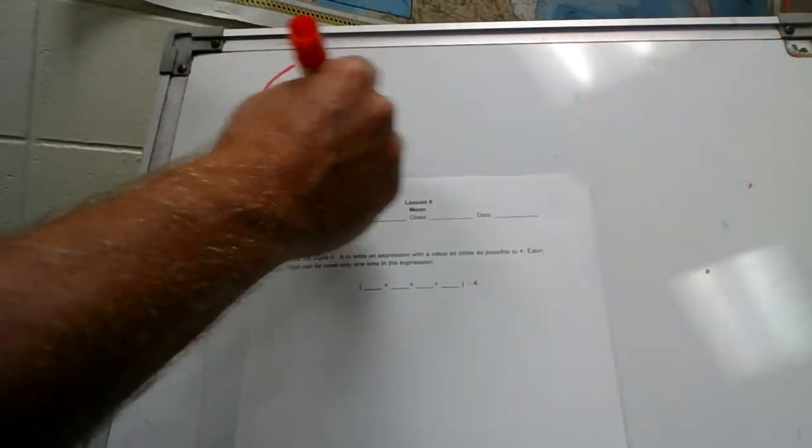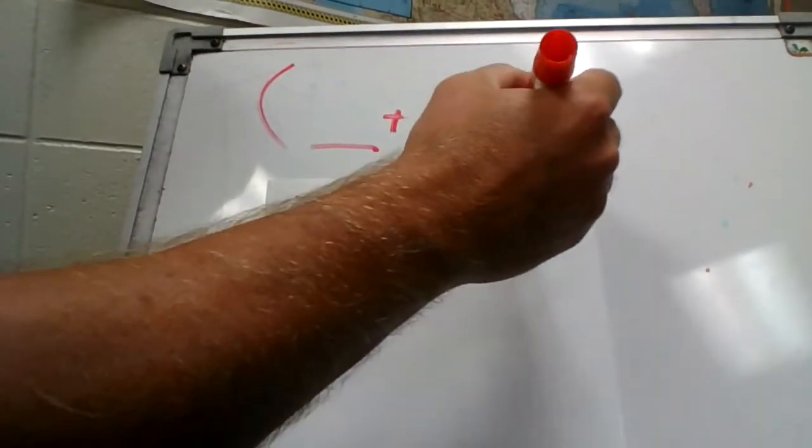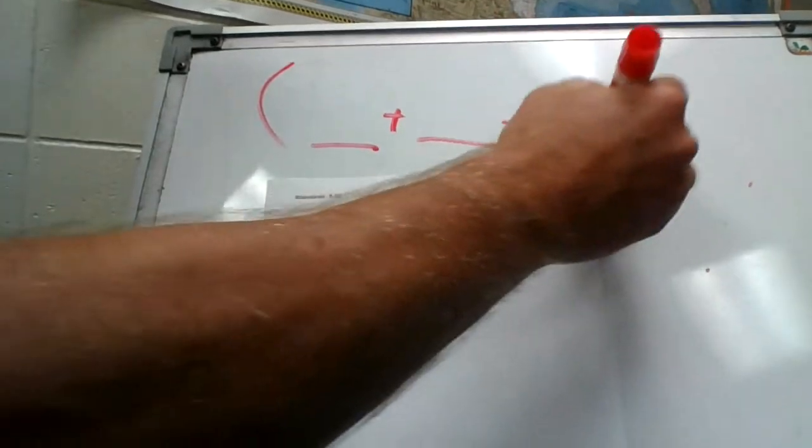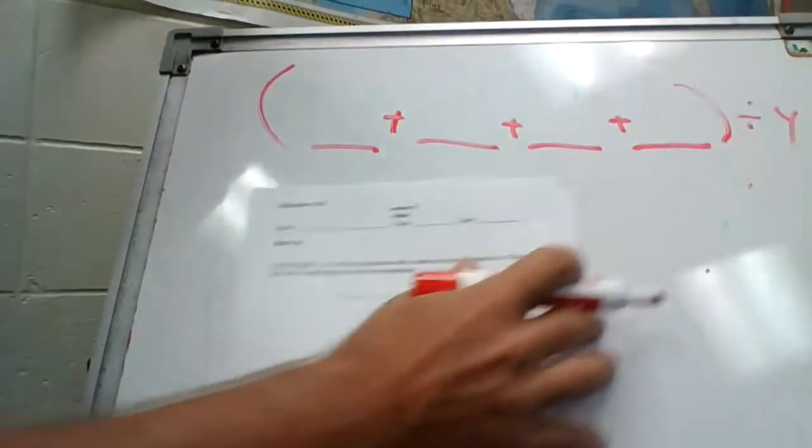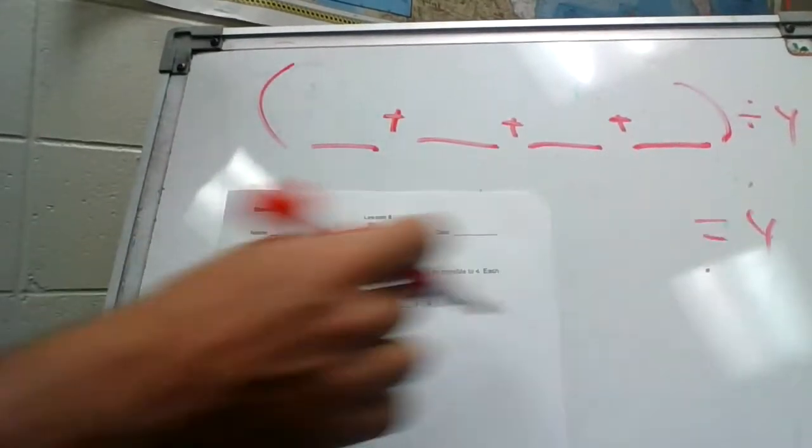Okay, so I'm going to write it up here so we can see it a little bit better. Got four blanks, divided by four, and this has to equal four as close as we can.